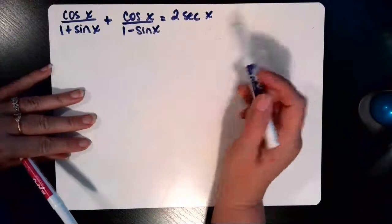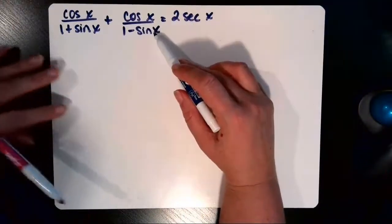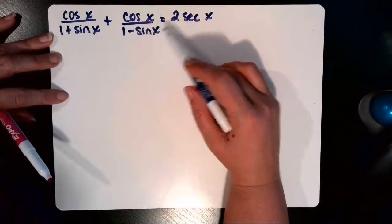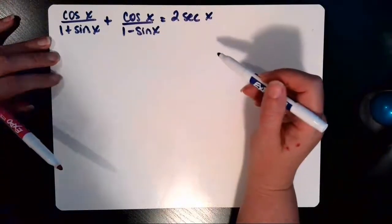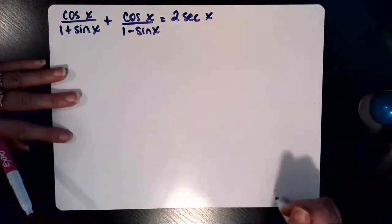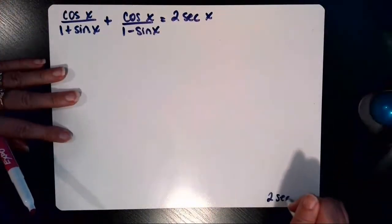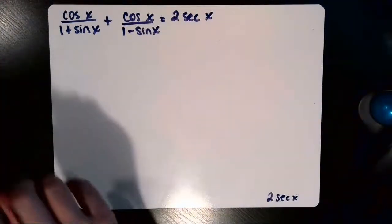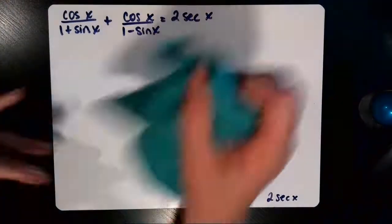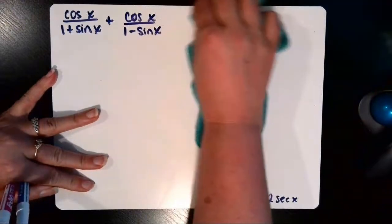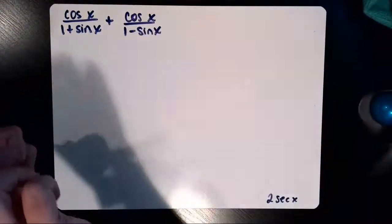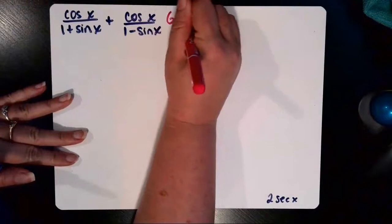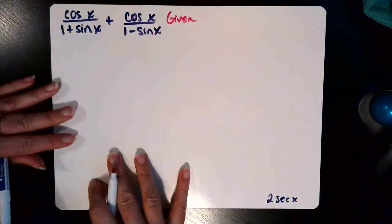You usually start verifying trig identities with the more complicated side and show that it equals the less complicated side. So down here at the bottom, I'm just going to jot down 2 secant of x because that's where I'm going to be heading. And then I'll start with this left hand side as the more complicated side. And that will be my given information.